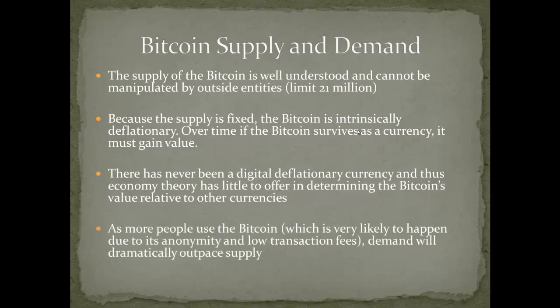As more people use the Bitcoin, which is very likely because of low transaction fees and anonymity, demand will dramatically outpace supply. If you are an early adopter who bought Bitcoins a few years back for 10 cents apiece, you probably are a millionaire today. Bitcoin, to recap, has a steady supply which is algorithmically constrained - no one entity can manipulate that. Because it's fixed, the currency is intrinsically deflationary. Because there is natural demand due to anonymity and low transaction fees, the price will increase. We don't have economic theory to talk about what long-term effects this will have.